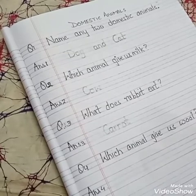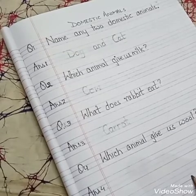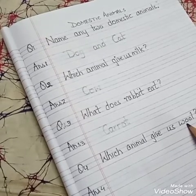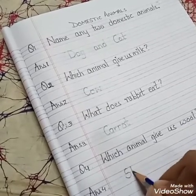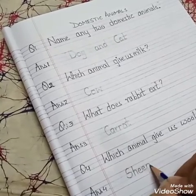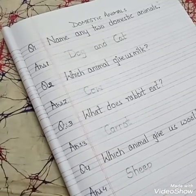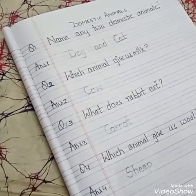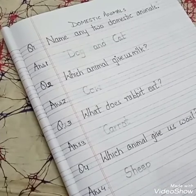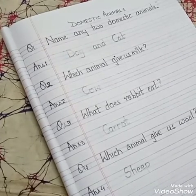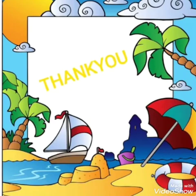Children, you all wear woolen clothes in winter season. The woolen clothes are made up of wool. So from where do we get wool? From sheep. S-H-E-E-P. Sheep. Now children, you will write all the question answers in your English interleaf copy and you will learn all the question answers. Thank you.